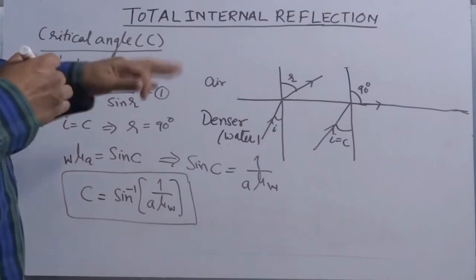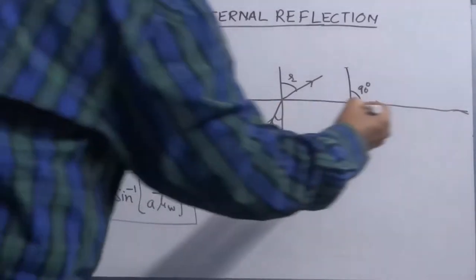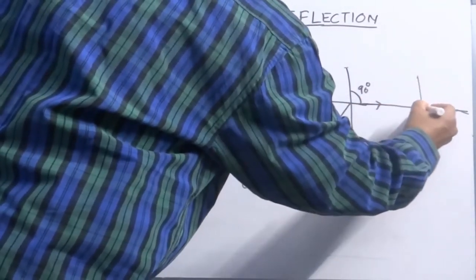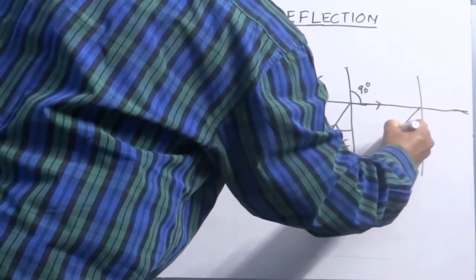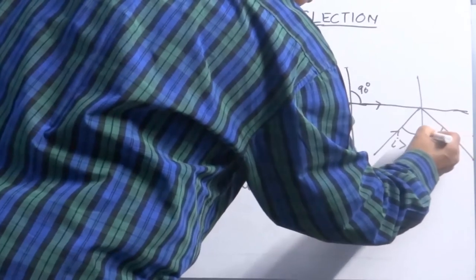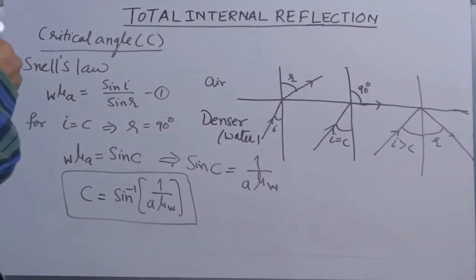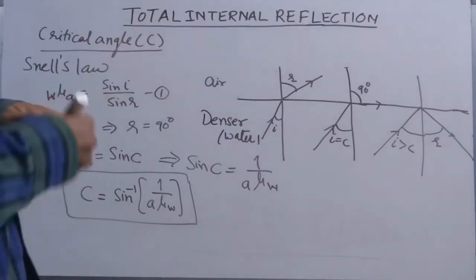Now the question arises: what will happen if we increase the angle of incidence beyond c? When the angle of incidence becomes greater than c, you will see the ray of light is no more refracting. Rather, it reflects back in the same medium and follows the laws of reflection. This phenomenon is termed as total internal reflection, or in short, TIR.